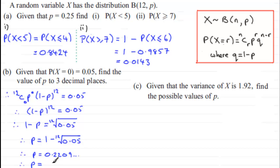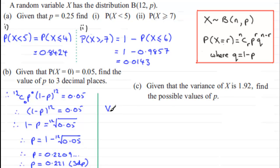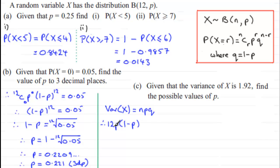Rounding to the accuracy asked for — three decimal places — P equals 0.221 to 3 d.p. Now in part C, we're given that the variance of X is 1.92 and we've got to find the possible values of P, so we're expecting more than one answer. The variance of a binomial distribution with parameters n and P is given by the formula npq, so with n=12 we have 12 × P × (1 minus P) = 1.92.